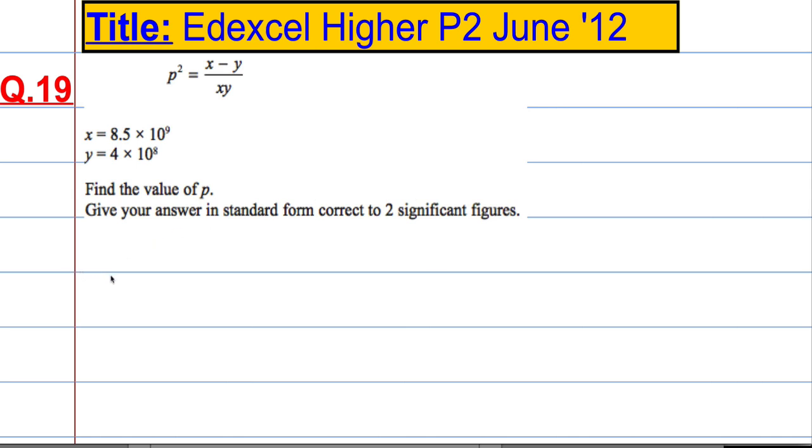OK, so what we want to do is write down what p is. So if p squared is all of this, that means p must be the square root of x minus y divided by xy.